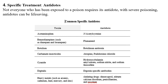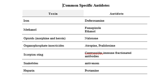Specific treatment depends on the type of chemical. For example: acetaminophen poisoning is treated with N-acetylcysteine; botulinum toxin with botulinum antitoxin; cyanide poisoning with hydroxocobalamin; and digitalis poisoning with digoxin-specific antibodies. These are specific antidotes.